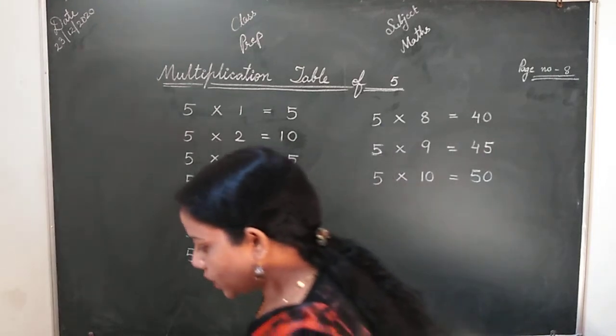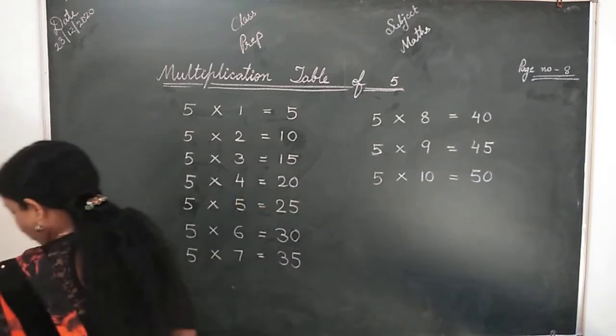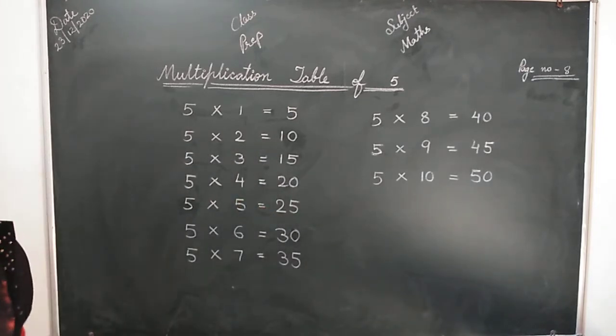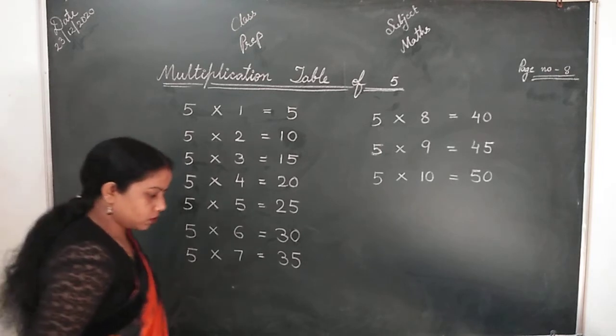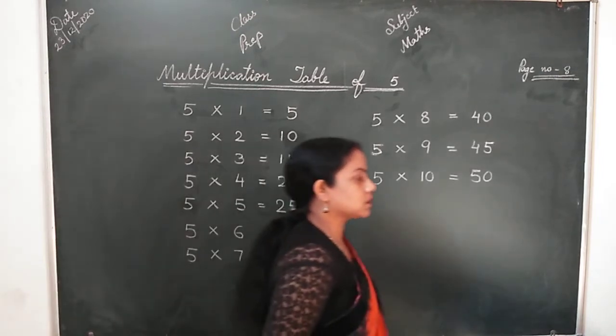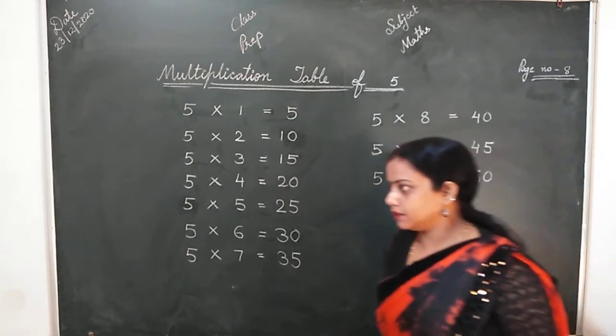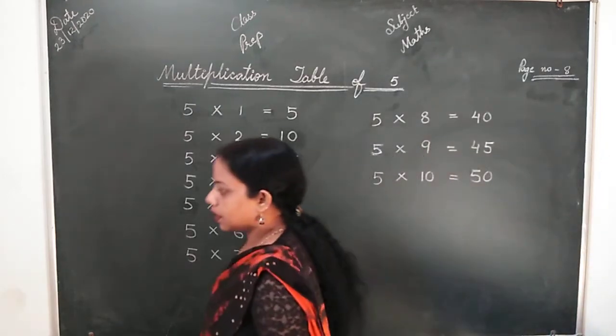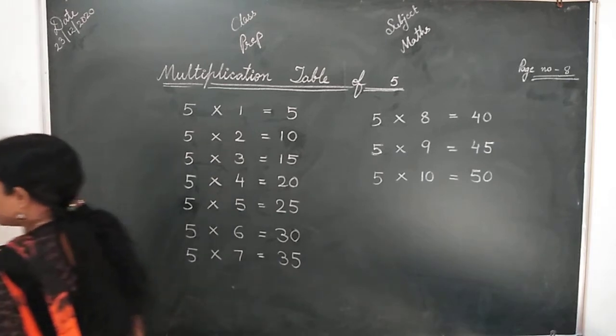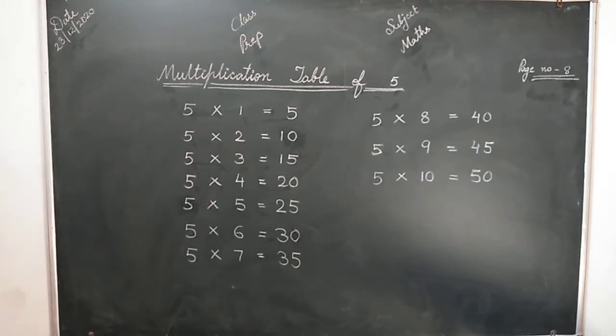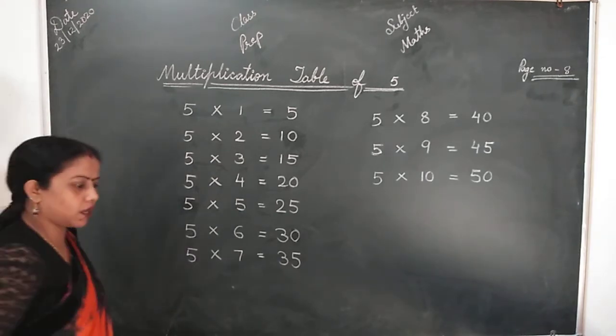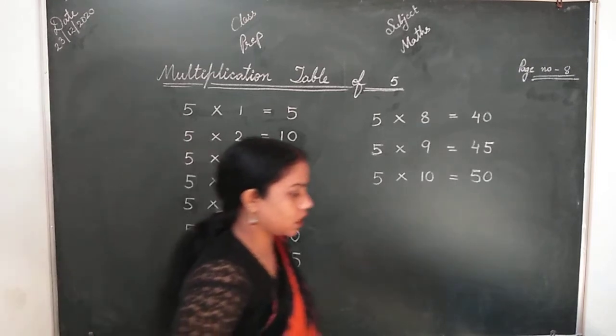Ek baar aap se 2 ki table ka oral karte hain. 2, 1s are 2. 2, 2s are 4. 2, 3s are 6. 2, 4s are 8. 2, 5s are 10. 2, 6s are 12. 2, 7s are 14. 2, 8s are 16. 2, 9s are 18. 2, 10s are 20.